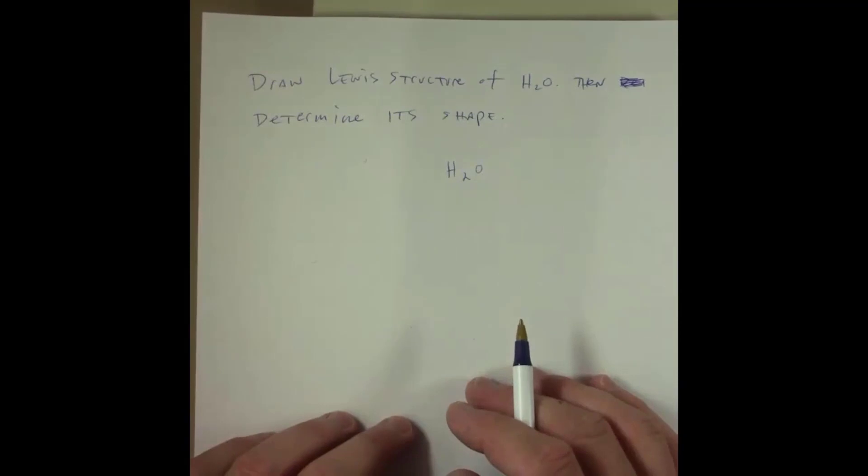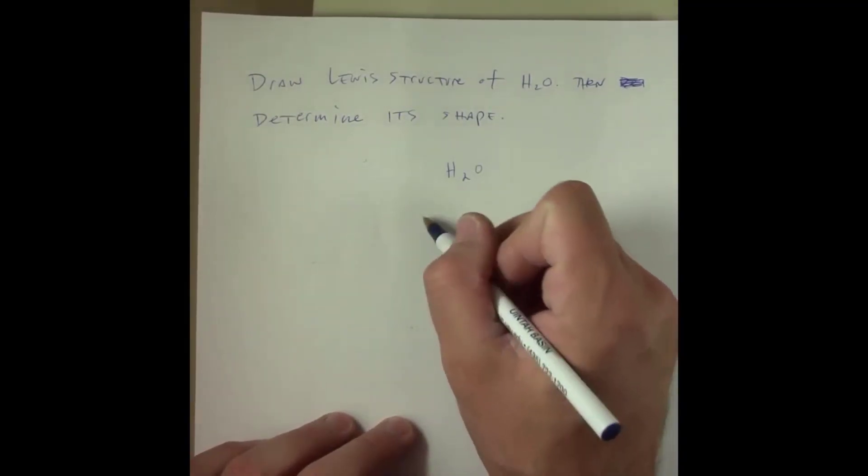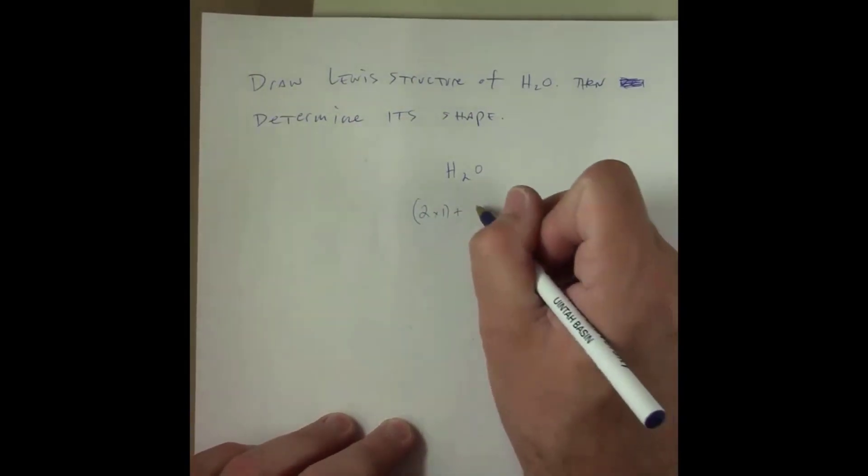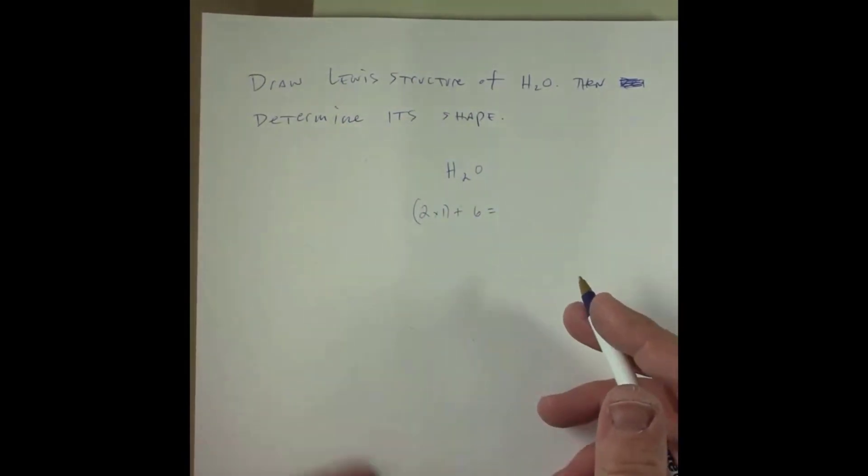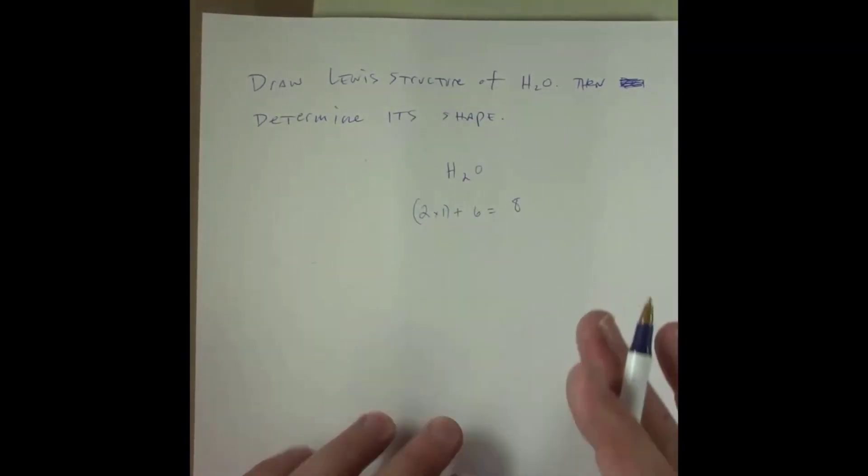As you should recognize, each hydrogen has one valence electron and there are two of them. Oxygen, being in group 6A of the periodic table, has six. Therefore the total number of valence electrons we have to play with in this molecule is eight.